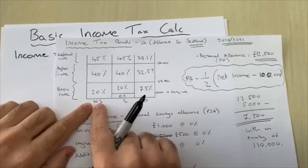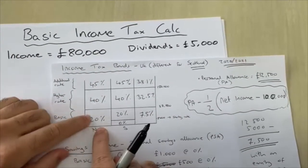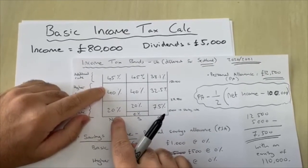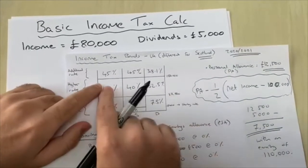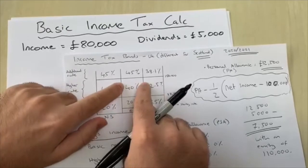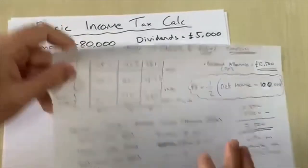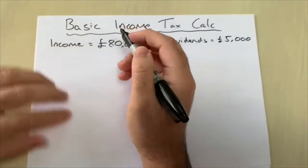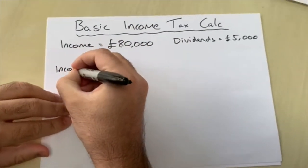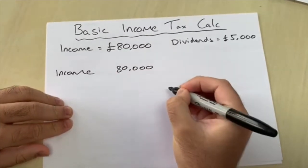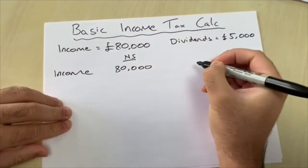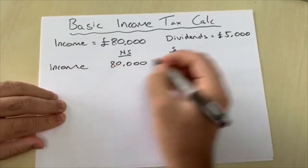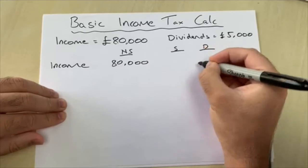Using the diagram, we know that £37,500 will be taxed at 20%. Thereafter, any additional income up to £150,000 will be taxed at 40%. As we move from left to right, my dividend income will continue from wherever I stop at that tax rate. So we split this out: non-savings income is £80,000, savings income is zero, and dividends income is £5,000.